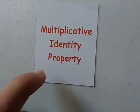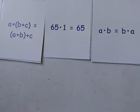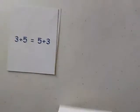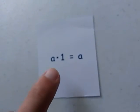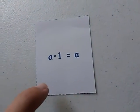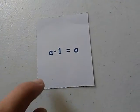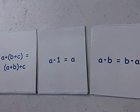Multiplicative Identity Property — this means that any number times 1 equals itself. This card belongs with this stack. Last card: A times 1 equals A. Because any number times 1 equals itself, this card belongs with this stack. And we have completed the game.